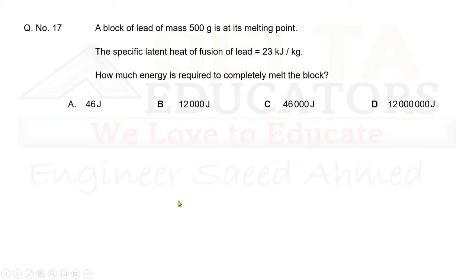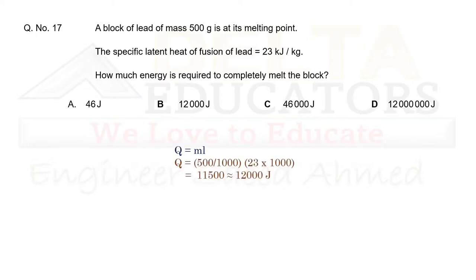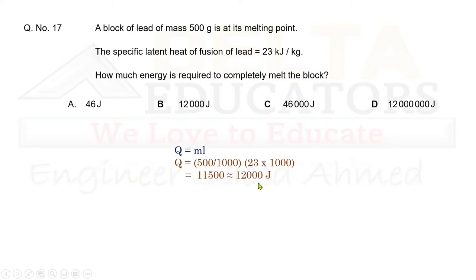Question 17: A block of lead of mass 500 g is at its melting point. The specific latent heat of fusion of lead is 23 kJ/kg. How much energy is required to completely melt it? Using Q = mL: mass = 500 g = 0.5 kg, L = 23 kJ/kg = 23,000 J/kg. Q = 0.5 × 23,000 = 11,500 J, approximately 12,000 J. 12,000 J is given in option B. Correct option is B.